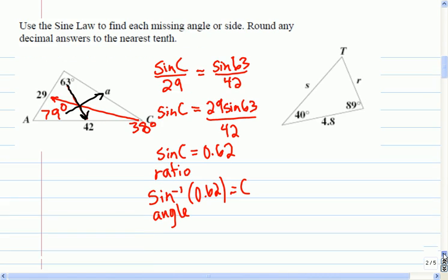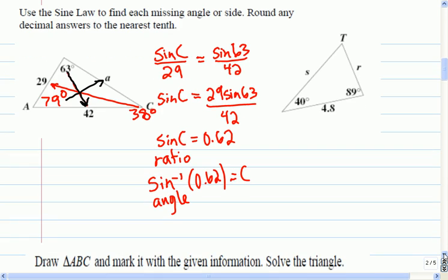So for us, it's going to be the, oops. Okay, so sorry, because I'm looking for A, I'm going to put A on the top. So I'll say A divided by the sine of 79 equals 42 divided by the sine of 63.